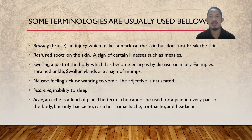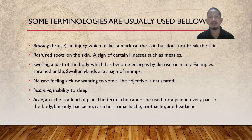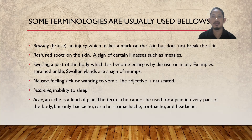Next, swelling. Swelling ini adalah bengkak atau pembengkakan — ini tanda dari peradangan. A part of body which has become enlarged by disease or injury. Example: sprained ankle; swollen glands are sign of mumps. Jadi bengkak adalah bagian dari tubuh yang menjadi membesar karena penyakit atau cedera. Contohnya adalah pergelangan kaki yang terkilir, atau kelenjar yang mengalami pembengkakan seperti gondongan — bengkak pada kelenjar parotis.